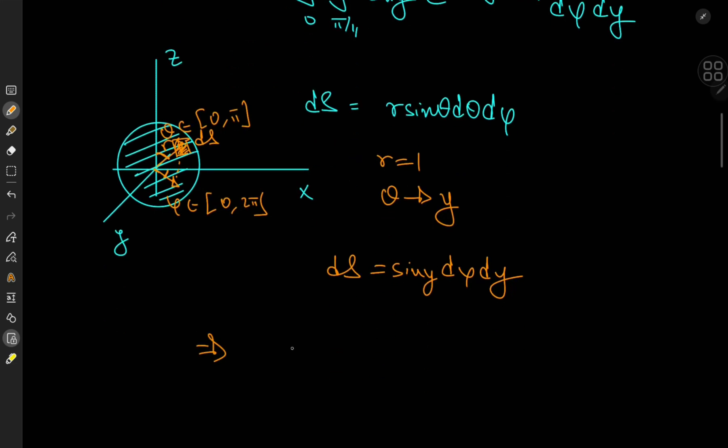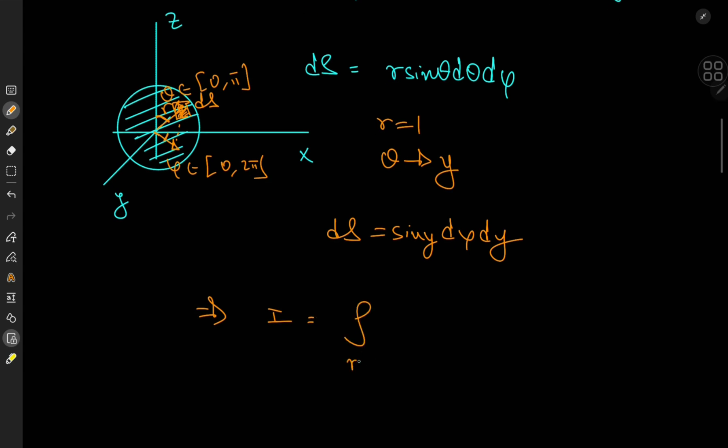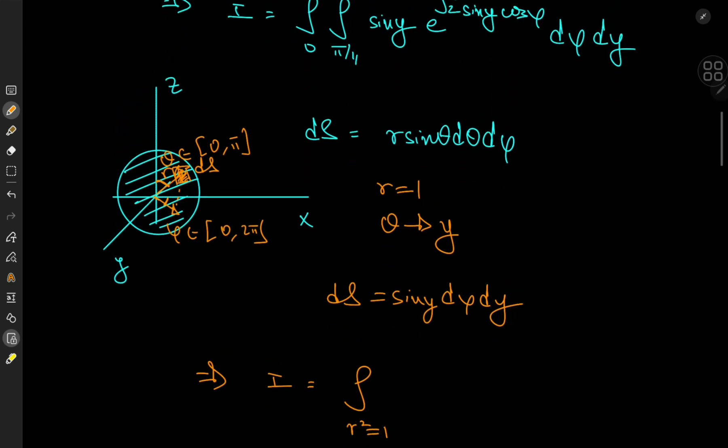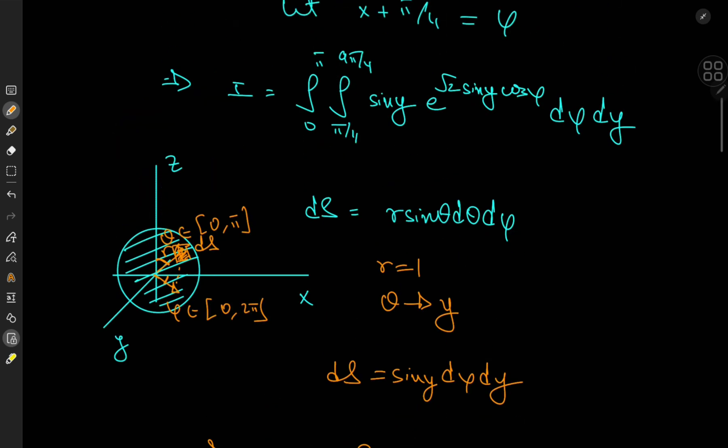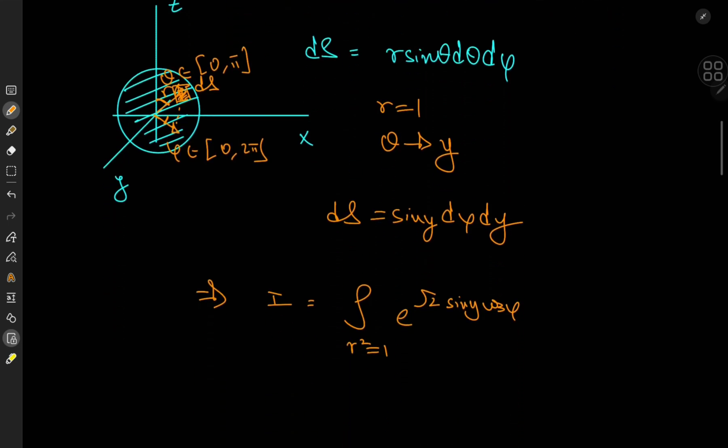So all of this implies that I here is actually the integral over the unit sphere, so that's r squared equal to one, of e to the root 2 sine y cosine phi.